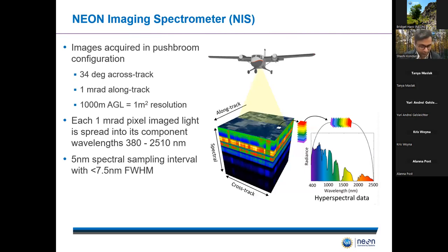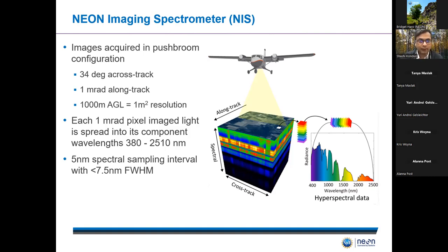The second sensor on the airplane is an imaging spectrometer, which provides hyperspectral imaging. You may have heard of satellite-based platforms like Landsat or MODIS, which provide reflectance data for about 8 to 10 bands, making them multispectral sensors. What makes hyperspectral data special is that it captures the entire range of visible to near-infrared to short-wave infrared regions of the electromagnetic spectrum, sampled at a fine spectral interval of 5 nanometers. This results in over 426 bands — that's what makes it hyperspectral.